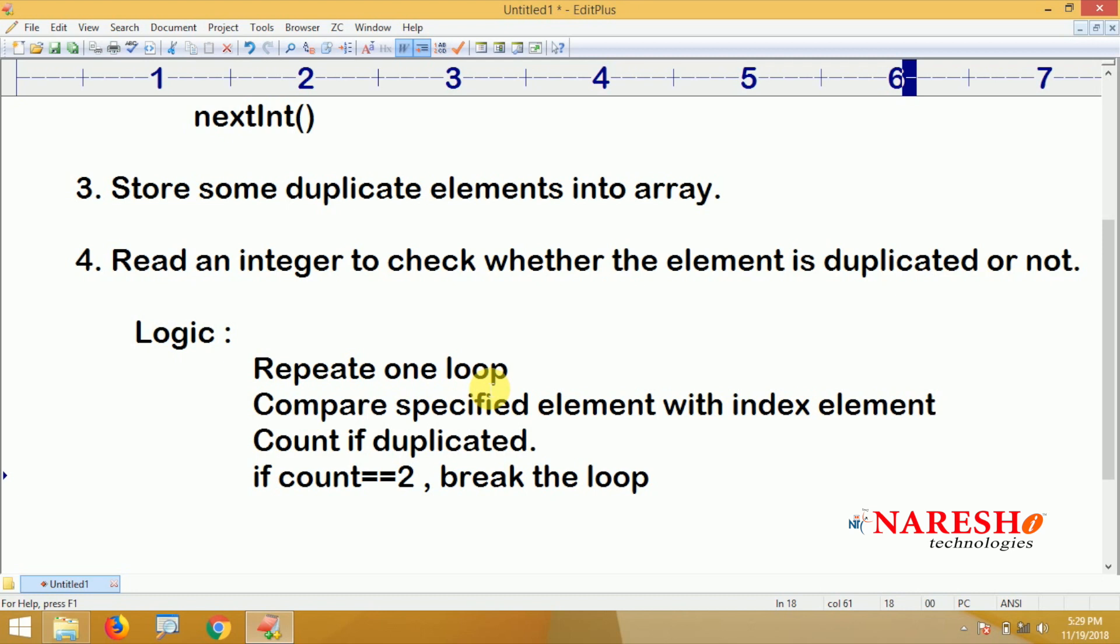Suppose if 1000 elements are there, if you find out the duplicate at the third index or fifth index only, no need to continue with remaining 995 iterations. Just break the loop and print element is duplicated.